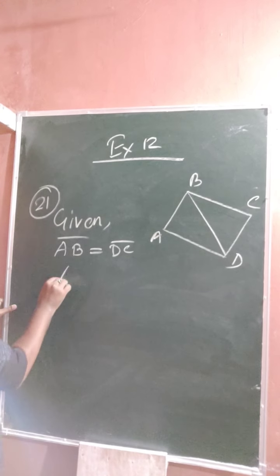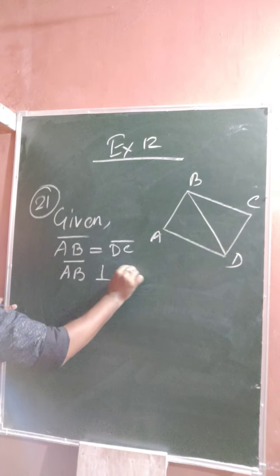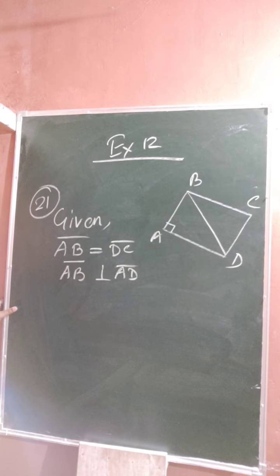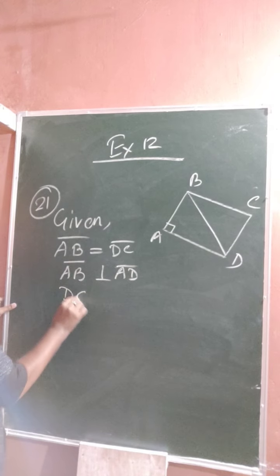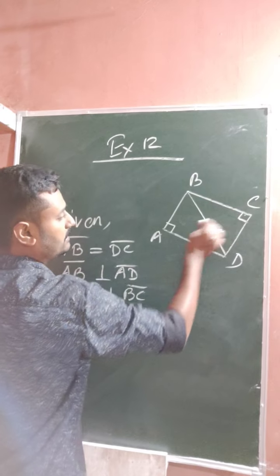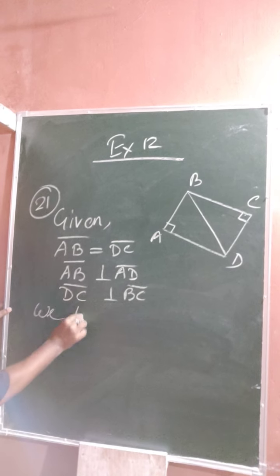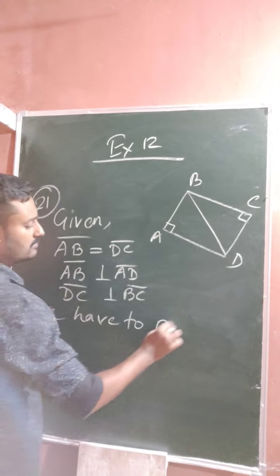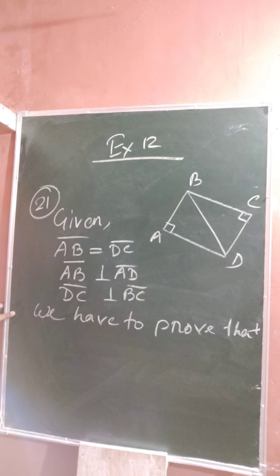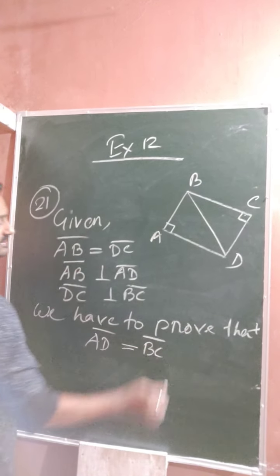Again, AB perpendicular to AD — this is 90 degrees. Again, it is given that DC perpendicular to BC, so DC is perpendicular upon BC. That means these two triangles are right angle triangles. We have to prove that AD equal to BC.